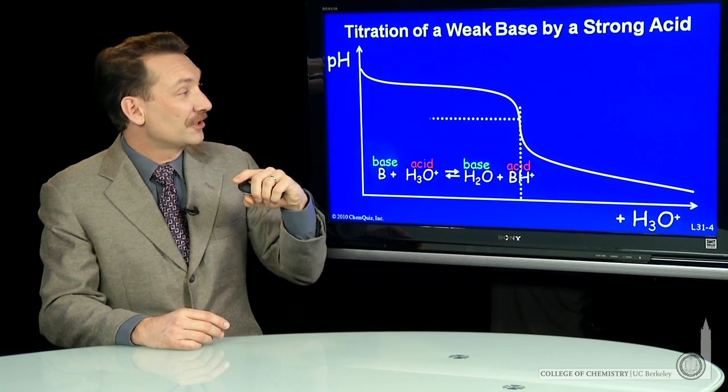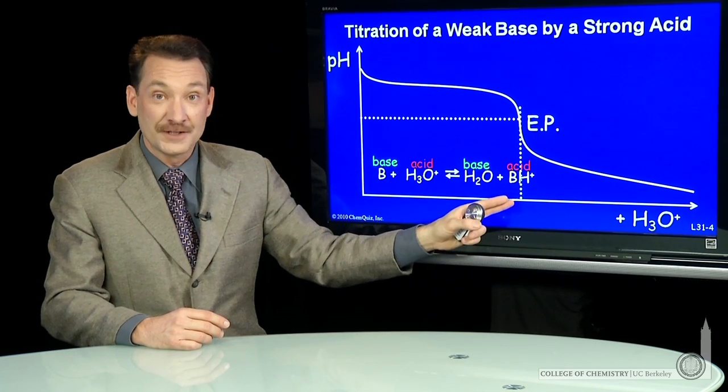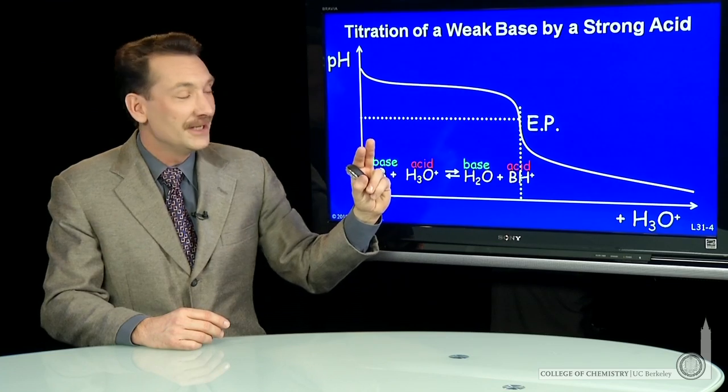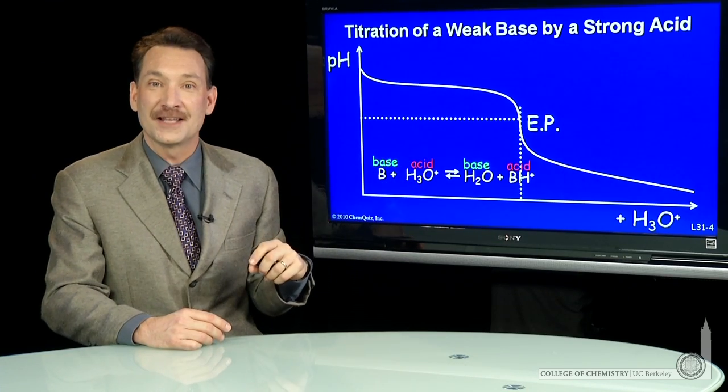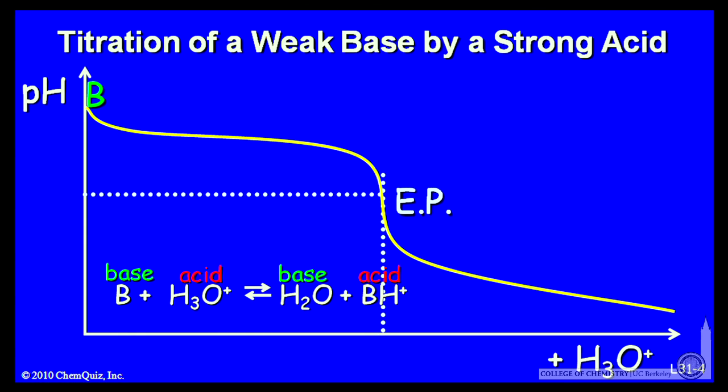So let's look at the various points along this curve. The equivalence point or endpoint is where I've added a mole of strong acid for every mole of base that I originally had. Initially, I have just a solution of the weak base, and I can calculate the pH there.